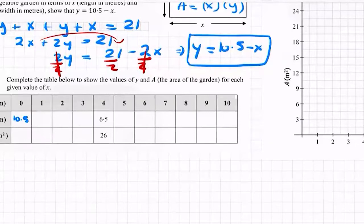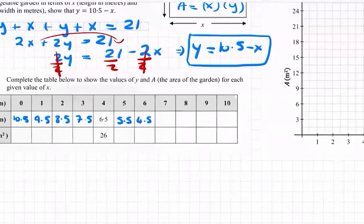When x is 1, my y is 10.5 minus 1, so 9.5, then 8.5, 7.5, 6.5, 5.5, 4.5, 3.5, 2.5, 1.5, and then 10.5 minus 10 is 0.5. My area is x by y, so 10.5 by 0 gives me 0.